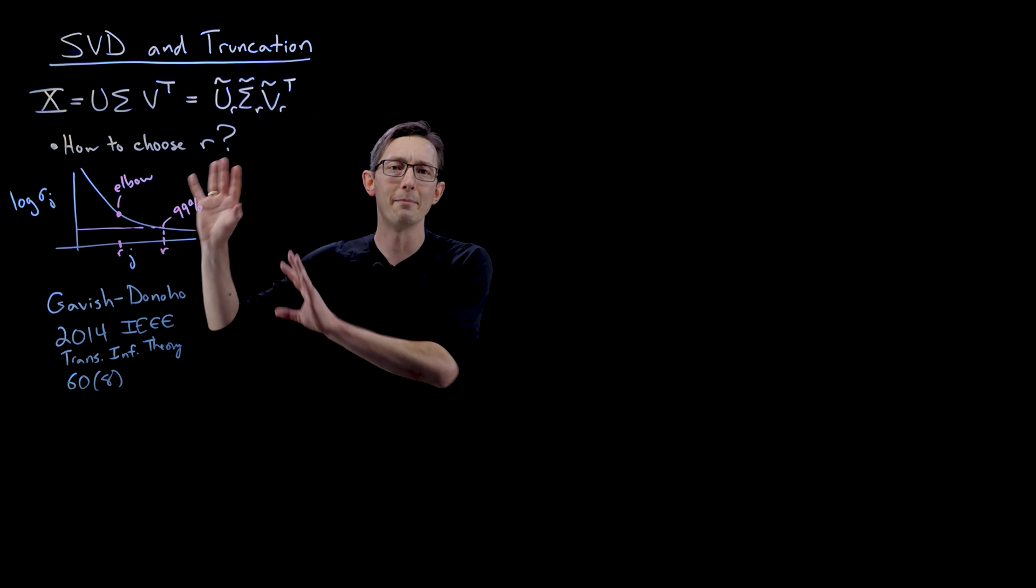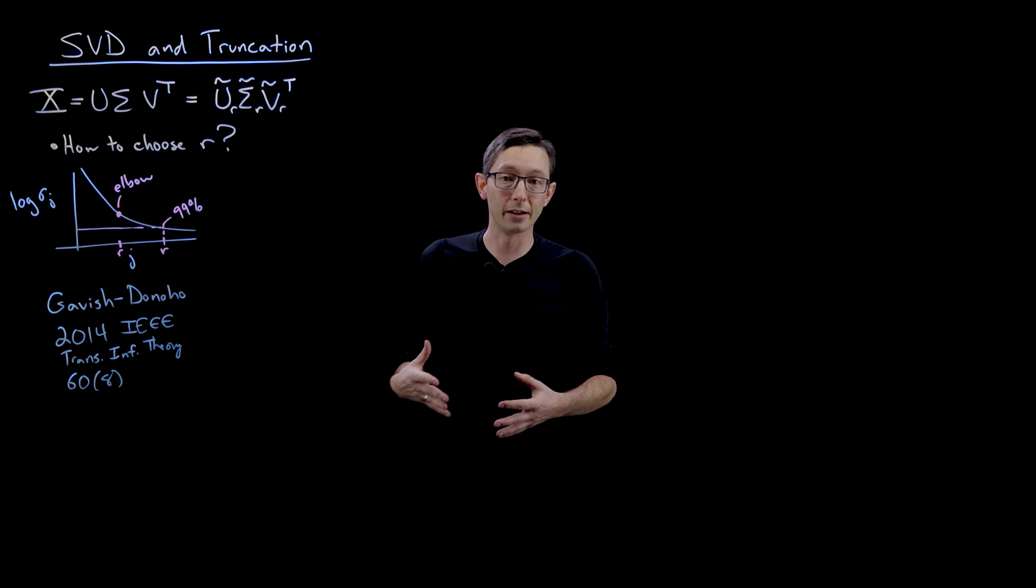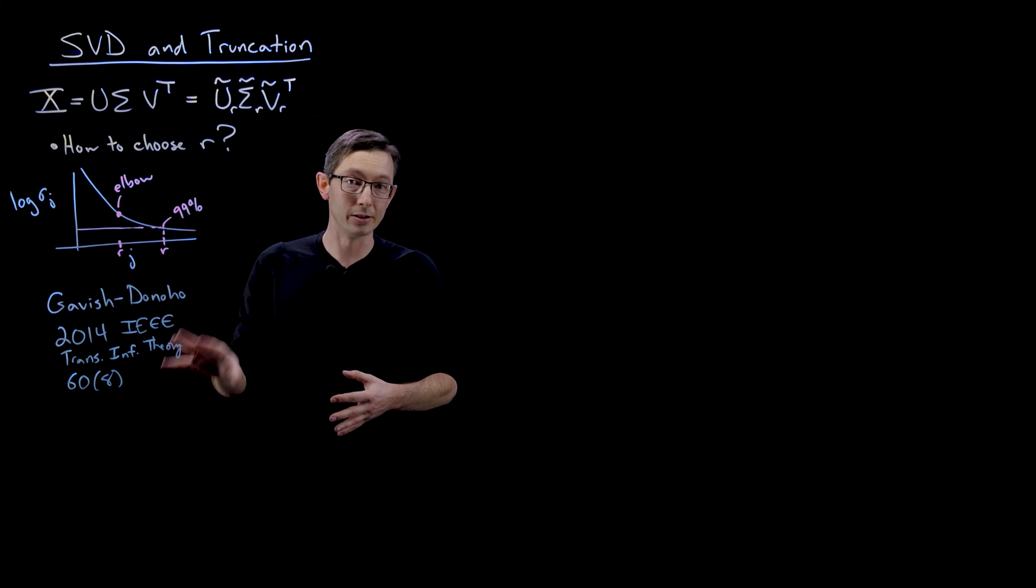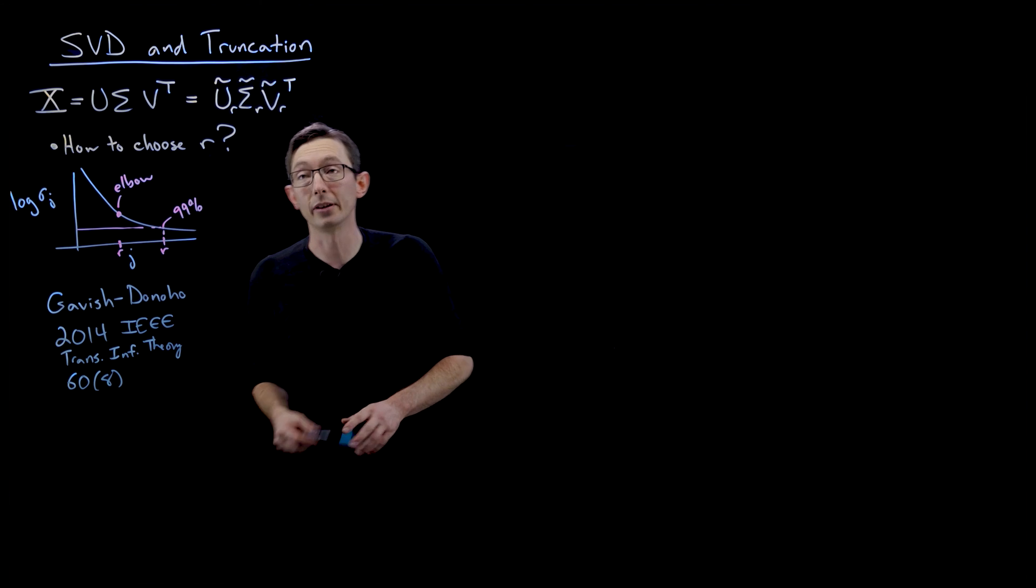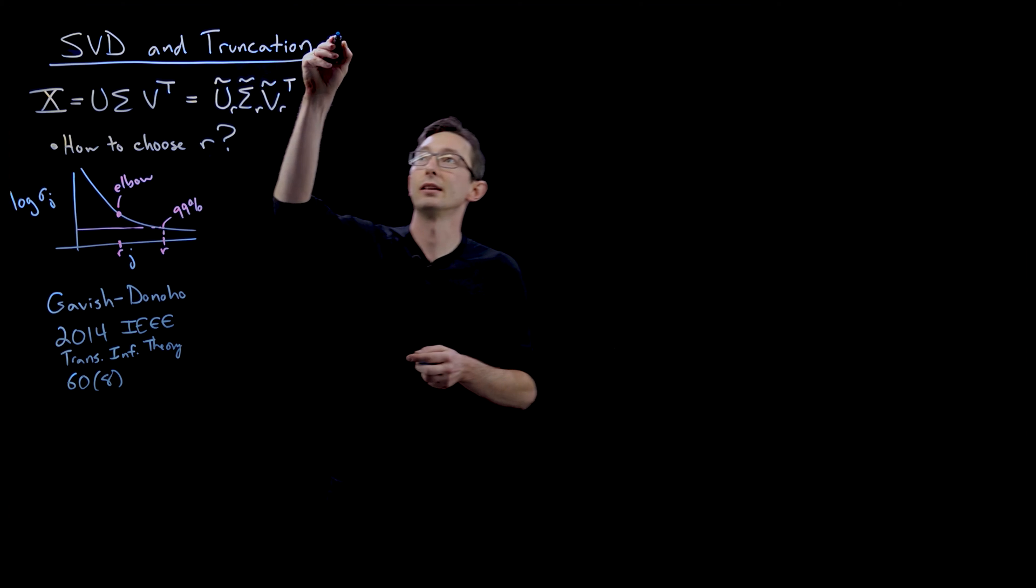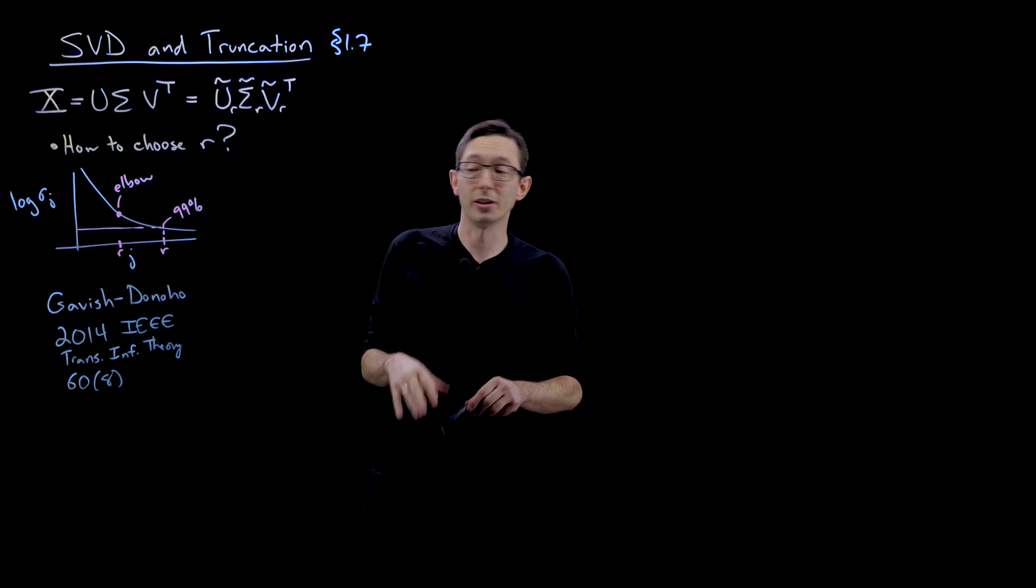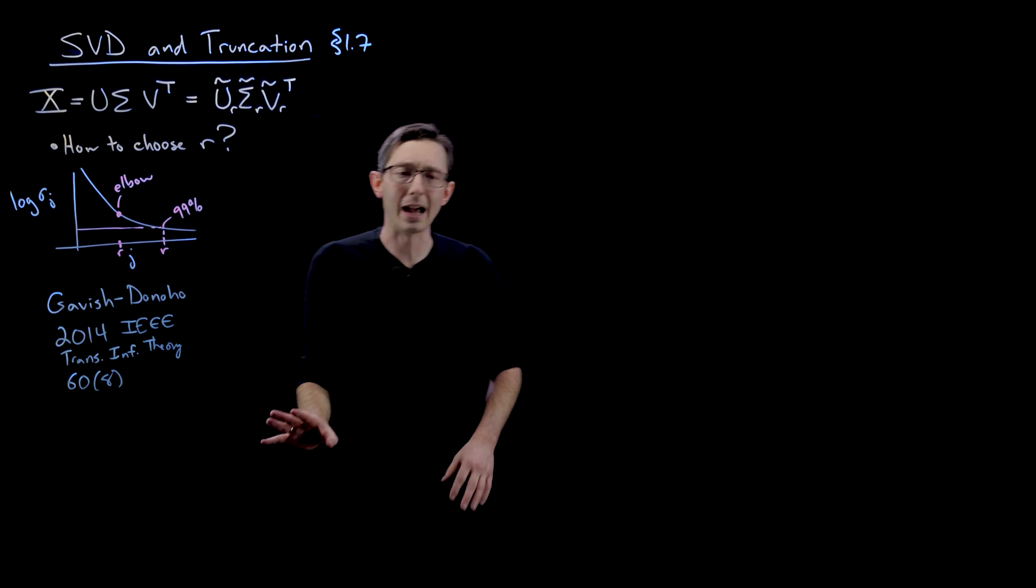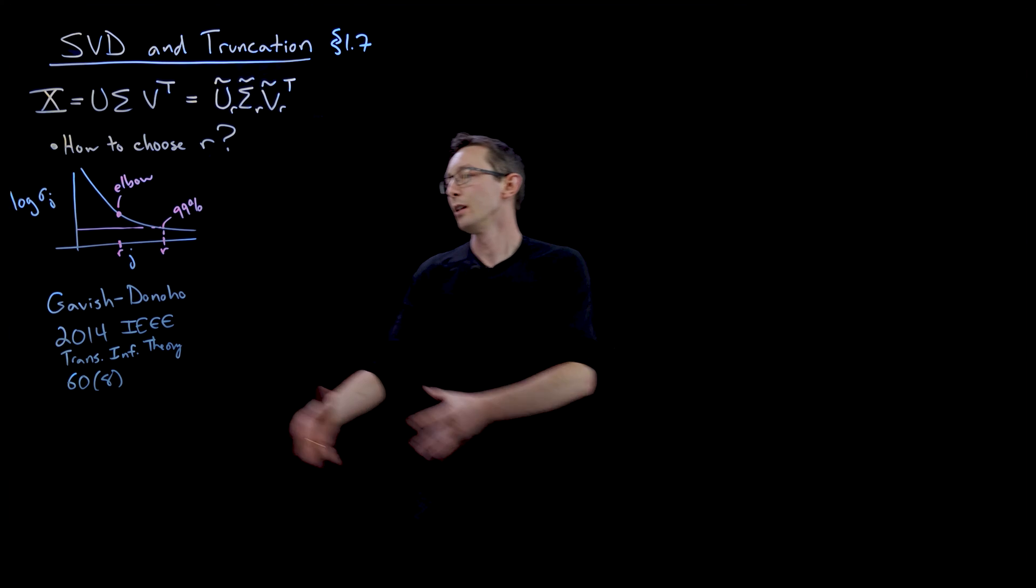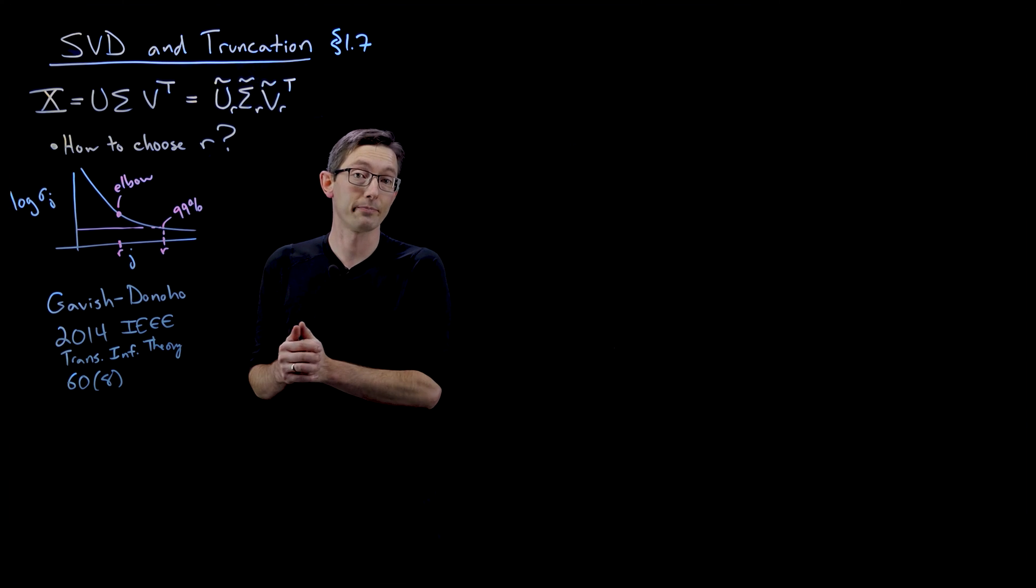And I'm not going to walk you through all of the math of their derivation. Their paper is fantastic. It's easy to read and they have code online. So you can work it out yourself. It's in section 1.7 of our book also. So this is section 1.7 of our book, Data-Driven Science and Engineering. The link will be in the comments. What I really want to do now is I want to just give you a feeling for how this Gavish Donoho optimal hard thresholding works.